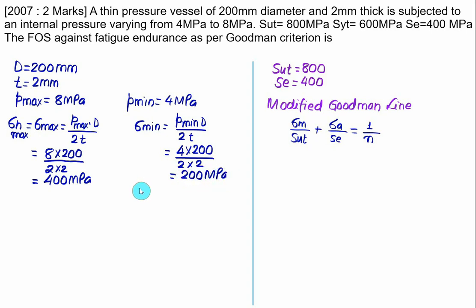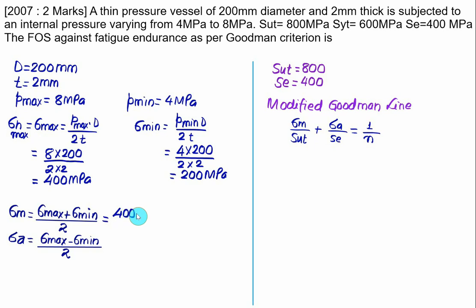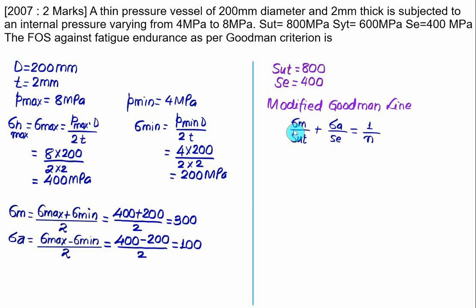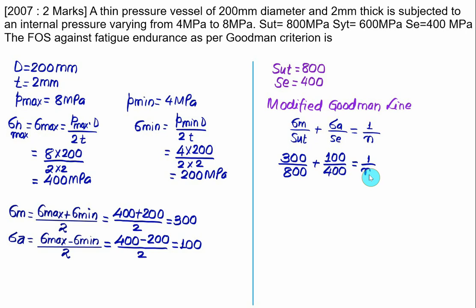From the hoop stresses, mean stress equals 400 plus 200 divided by 2, equal to 600 divided by 2, equal to 300 MPa. Amplitude stress equals 400 minus 200 divided by 2, equal to 200 divided by 2, equal to 100 MPa. Substituting: 300 divided by SUT 800, plus 100 divided by endurance strength 400, equals 1 upon N. Solving gives a factor of safety N very close to 1.6.